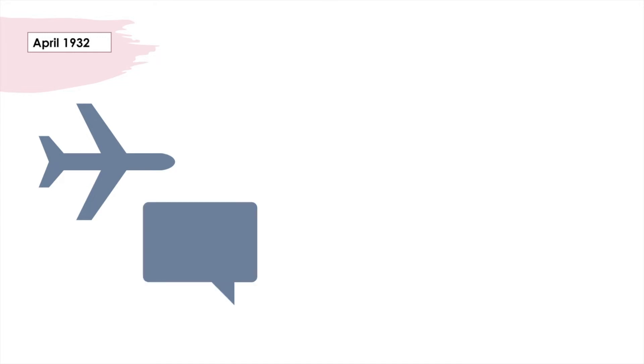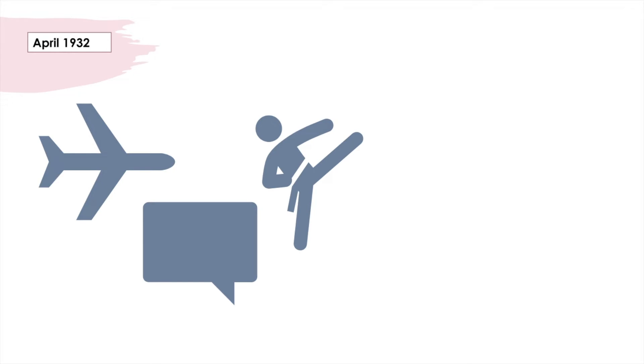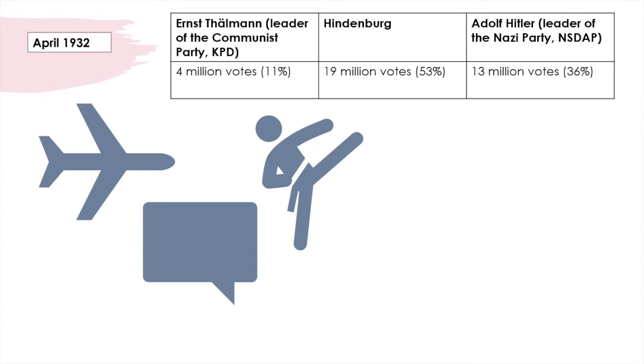Hitler campaigned furiously. He rented an aeroplane and flew from town to town delivering speeches. His SA paraded in support of the Nazis and they disrupted communist rallies. Political opponents also fought in the streets. Hindenburg was re-elected, but the results were a serious blow to the communists and a boost to Hitler.